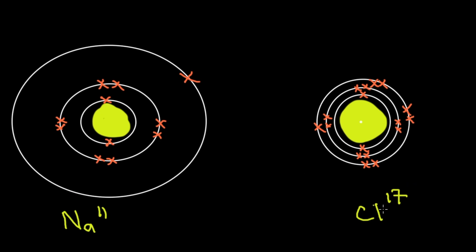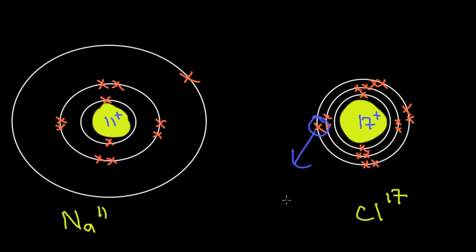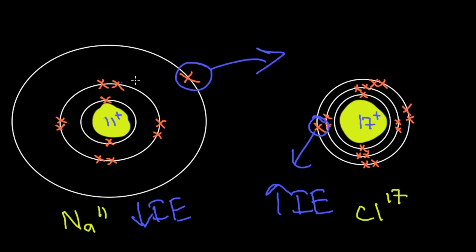Sodium has 11 electrons, but with only 11 protons, it keeps the outermost electron further away, giving it a much bigger atomic radius than chlorine. Chlorine has 17 electrons, and the effect of 17 positive charges keeps those electrons super tight to the nucleus. Therefore it requires high ionization energy to remove an electron from chlorine, whereas sodium requires low ionization energy.